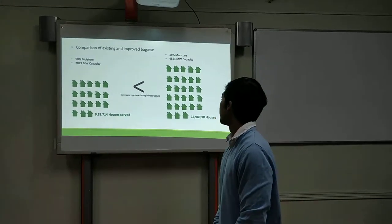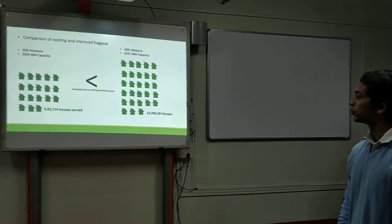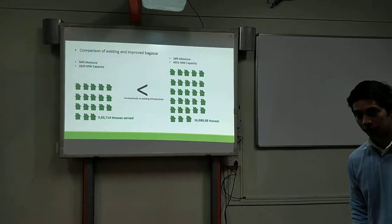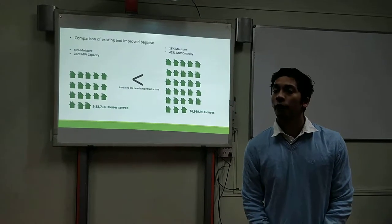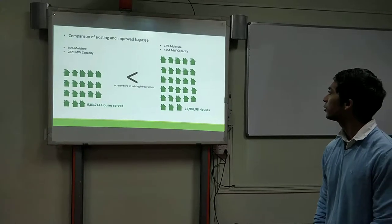As you can see in the slides, the current capacity is only able to cater to 9 lakh homes. With our product, dry bagasse with a moisture content of only 19%, we will be able to serve 16 lakh houses.